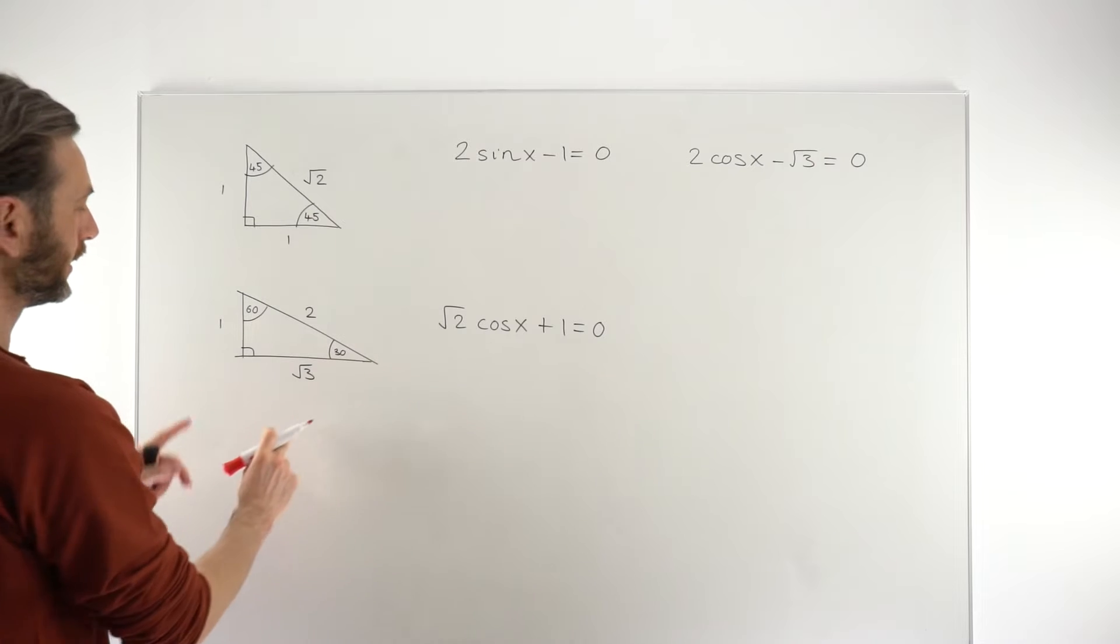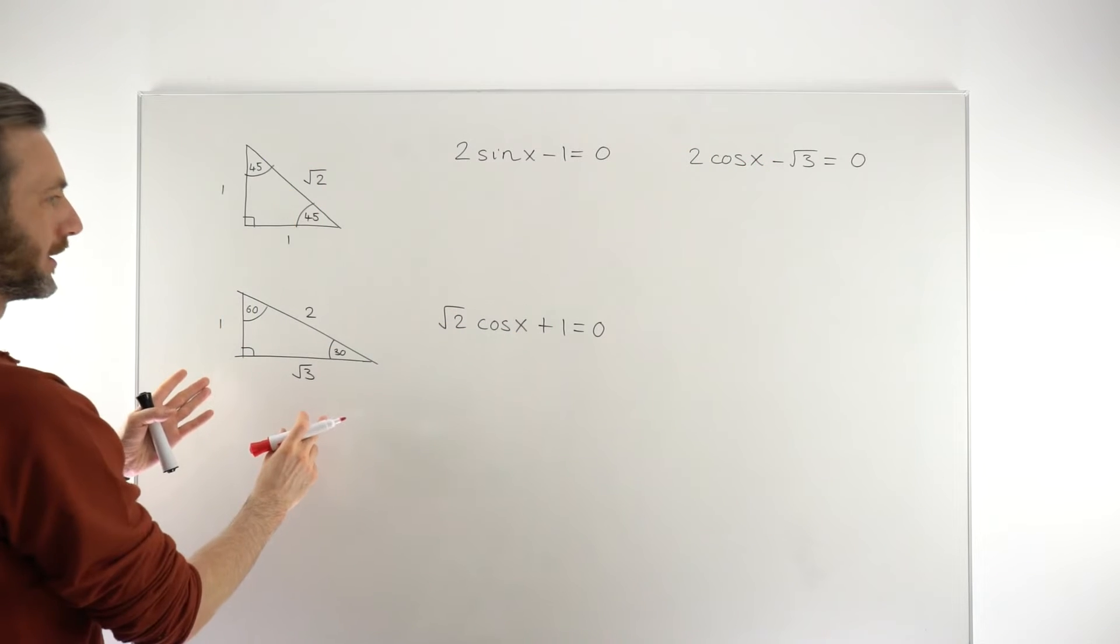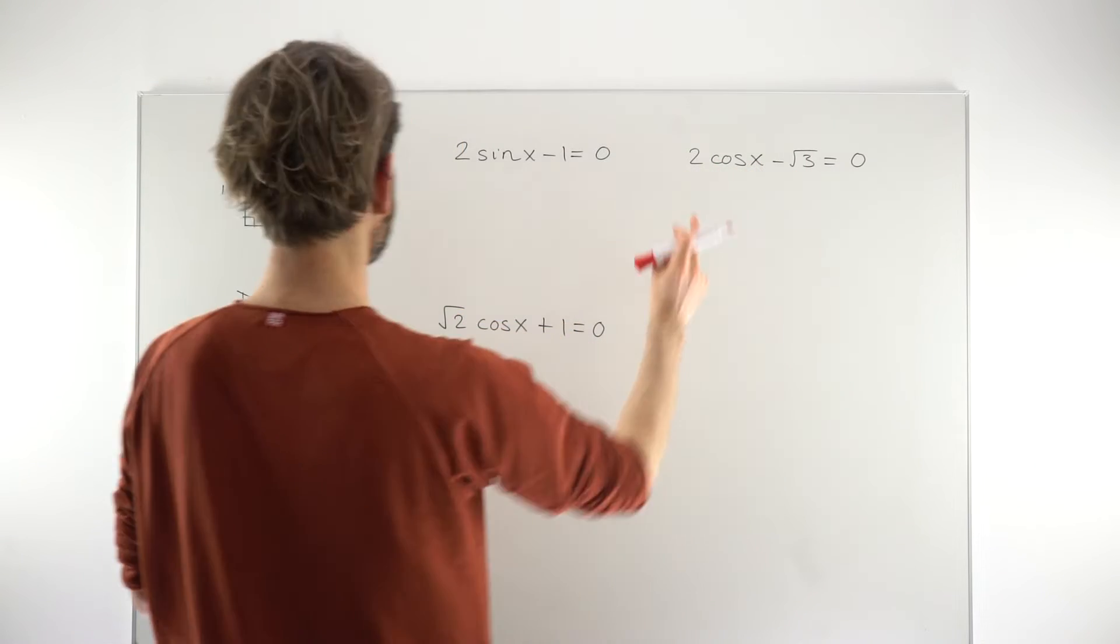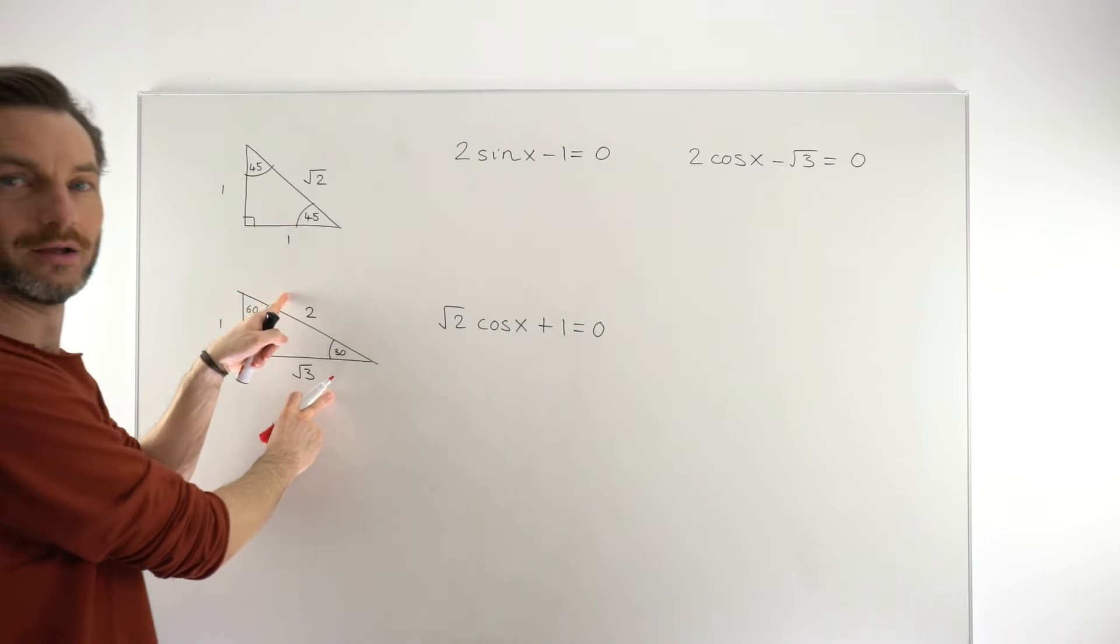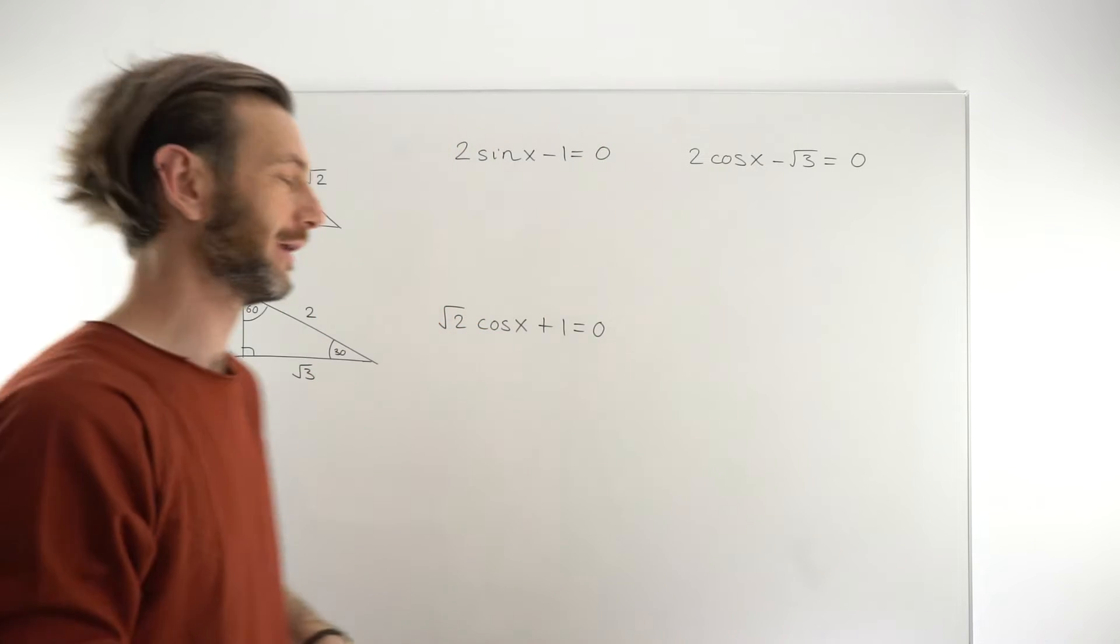So, that's the first kind of check. You should, by the time you've worked a few of these questions, just recognize, hey, it's a root 2 and a 1. That means it's going to be non-calculator. It's a root 3 and a 2. Oh, yeah, I'm going to probably use that triangle, which I've forgotten again and need to remember again.